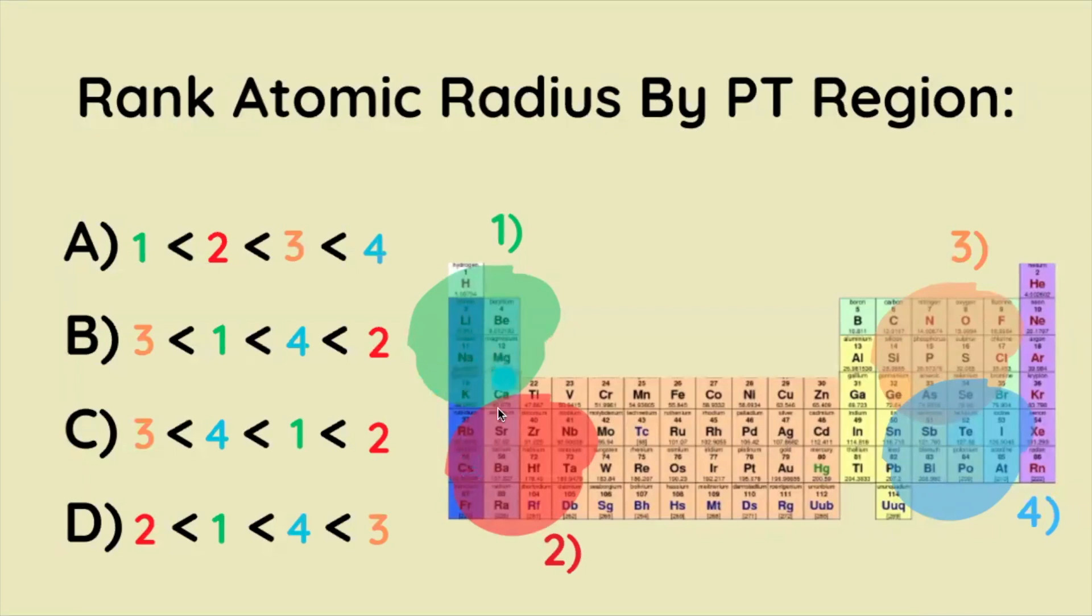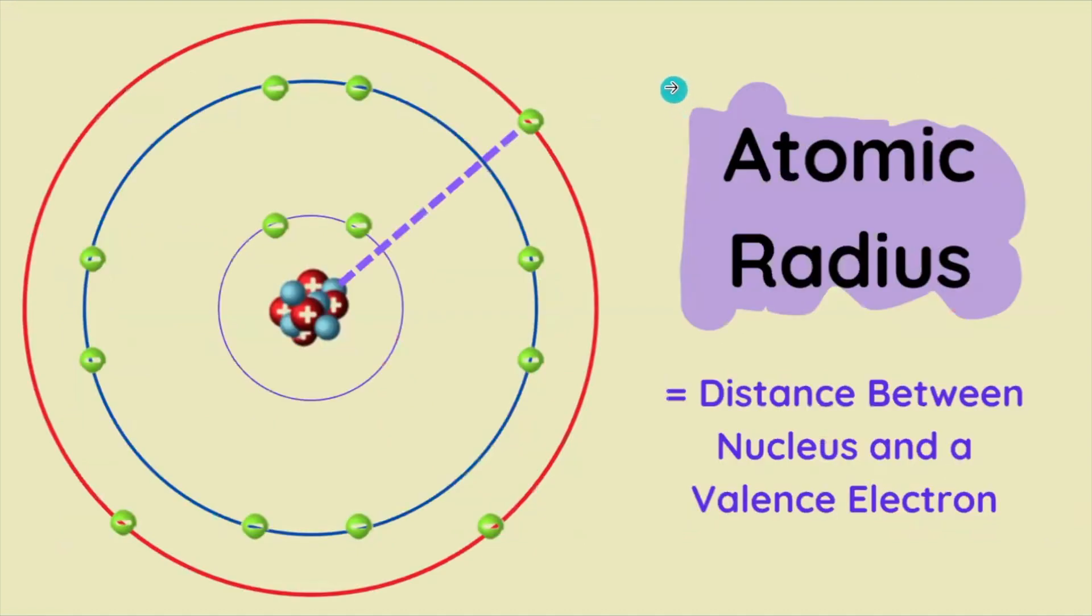Rank the atomic radius size by region on the periodic table - region 1, region 2, region 3, region 4. For instance, is 1 the biggest and 3 the smallest? In a nutshell, atomic radius is simply the distance between the nucleus and the outermost electron.